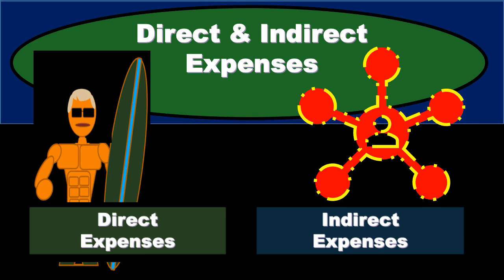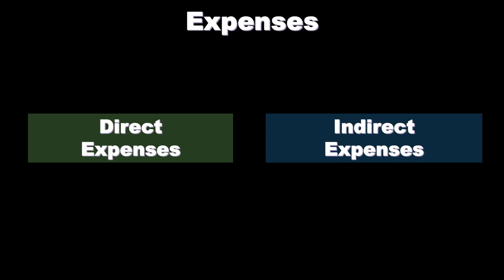In this presentation, we will discuss direct and indirect expenses. When considering responsibility accounting, we have our decentralized system. We have our organization decentralized into responsibility segments, with managers held responsible for different areas, segments, units, and departments. As we consider costs assigned to those different units, it's important to distinguish between direct expenses and indirect expenses.